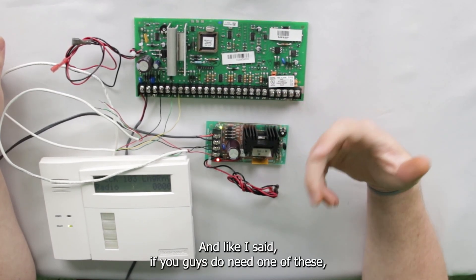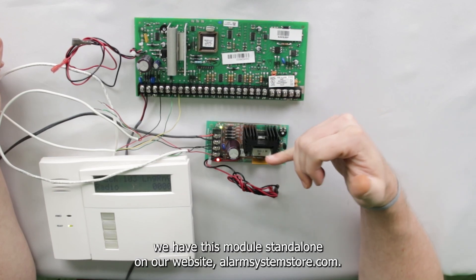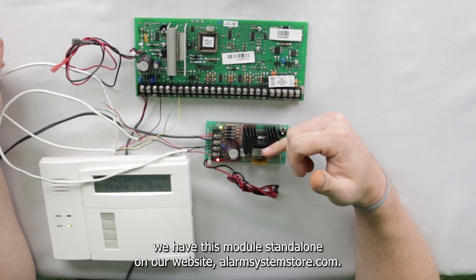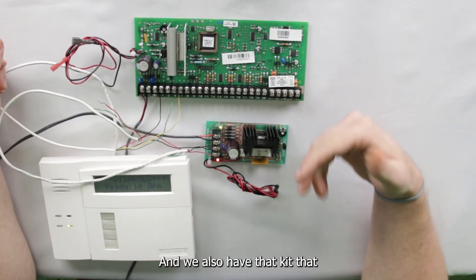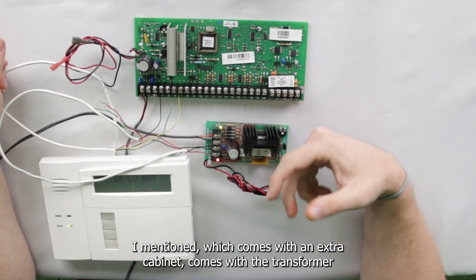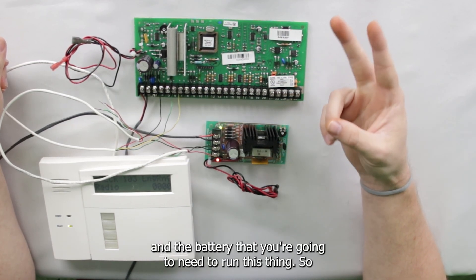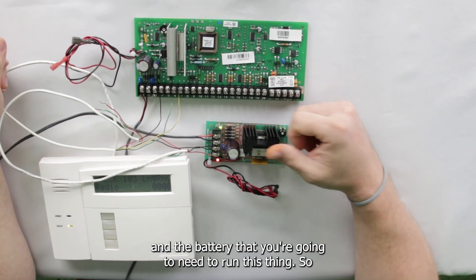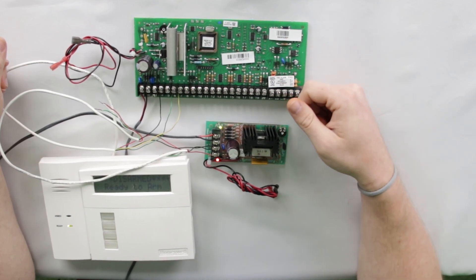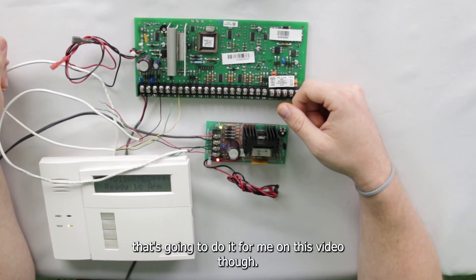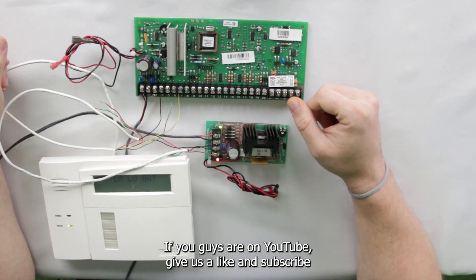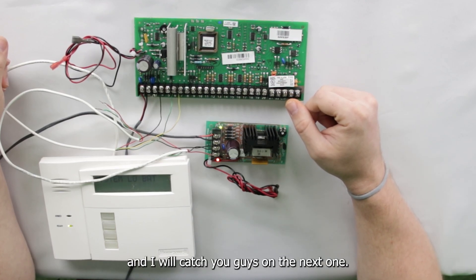And like I said, if you guys do need one of these, we have this module standalone on our website alarmsystemstore.com. And we also have that kit that I mentioned, which comes with an extra cabinet, comes with a transformer and the battery that you're going to need to run this thing. So that's going to do it for me on this video though. If you guys are on YouTube, give us a like and subscribe and I will catch you guys on the next one.